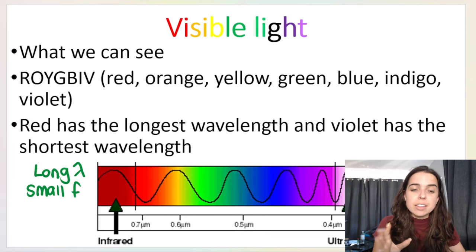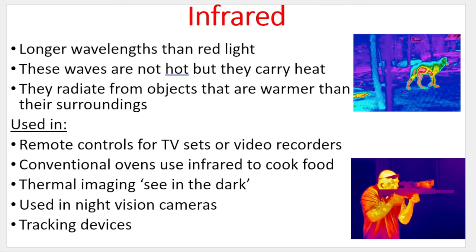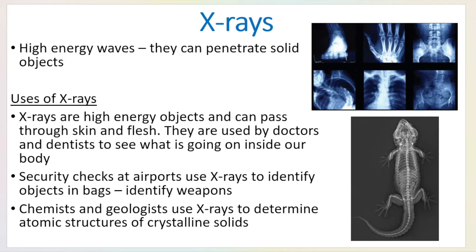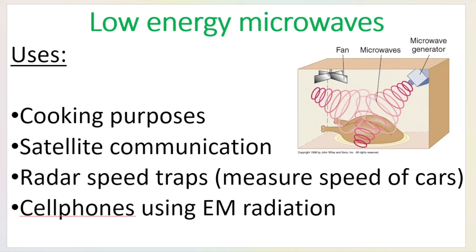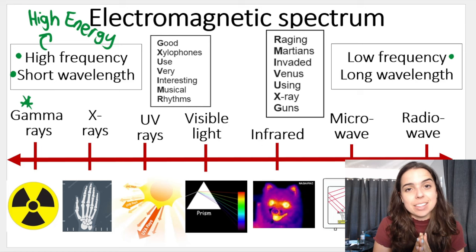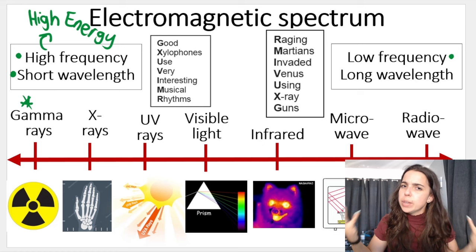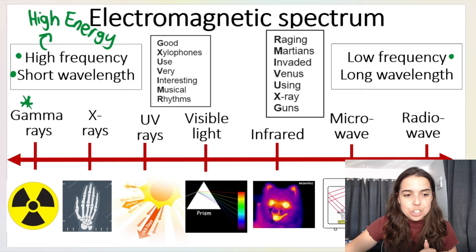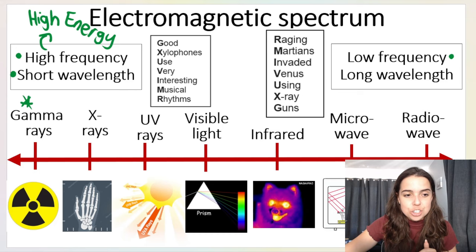You need to be able to give examples and uses of all the other types of radiation: infrared, UV radiation, x-rays, gamma rays, microwaves, and radio waves. They can ask you for two uses of infrared radiation, or where we find microwaves or x-rays. In the next videos we will be looking at the relationship between the variables, the particle nature of electromagnetic radiation, and using the formula to do calculations. I'll see you in the next video.